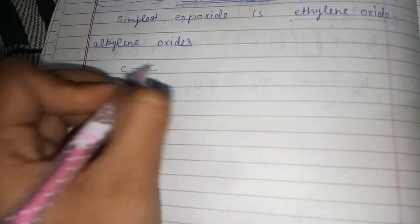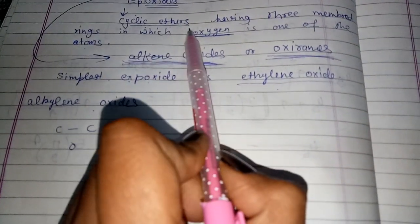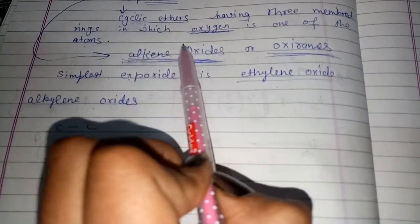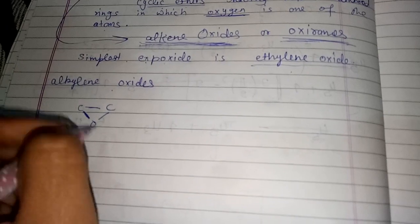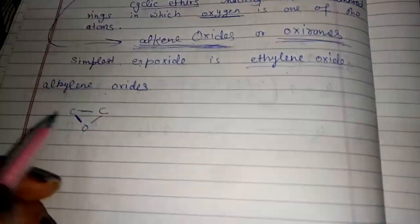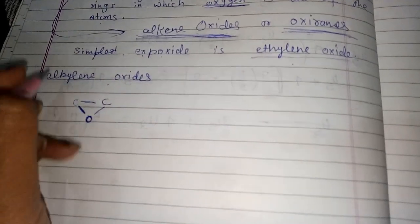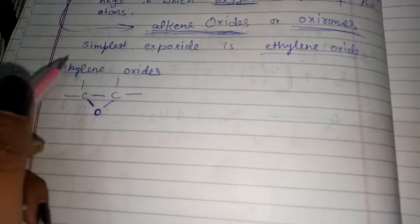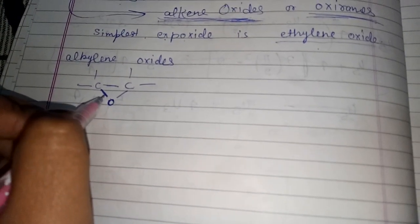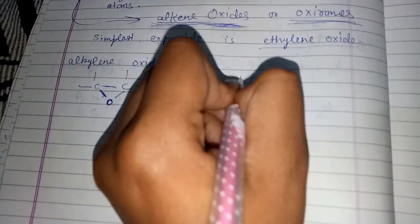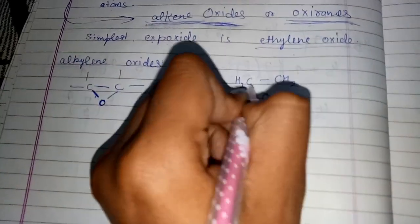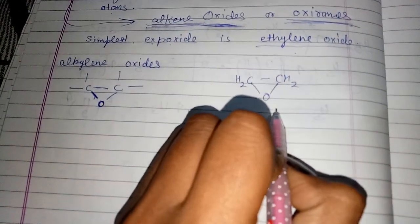We denote an epoxide when a carbon-carbon contains a single bond with one oxygen atom in a cyclic ether having a three-membered ring, in which oxygen is one of the atoms. The structure of ethylene oxide is this — this is ethylene oxide.